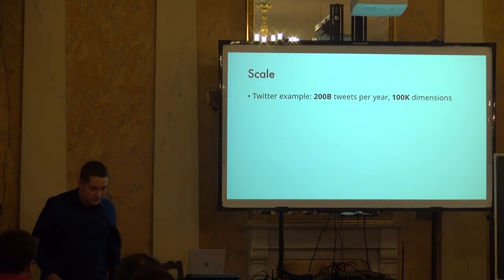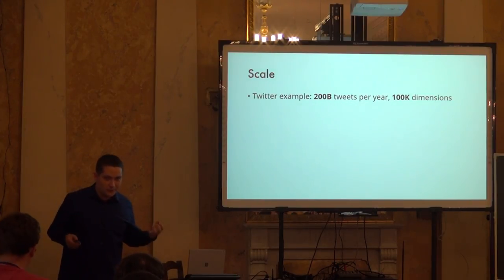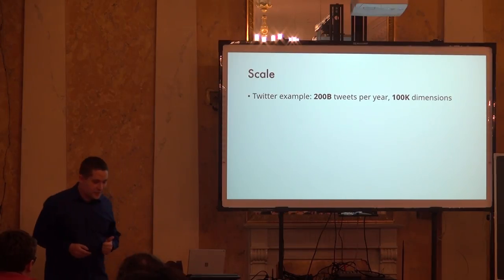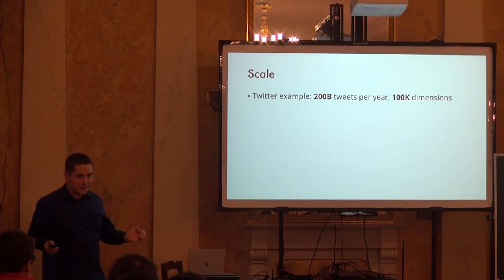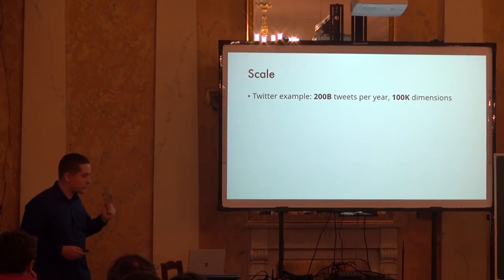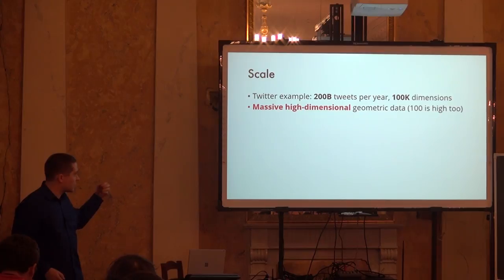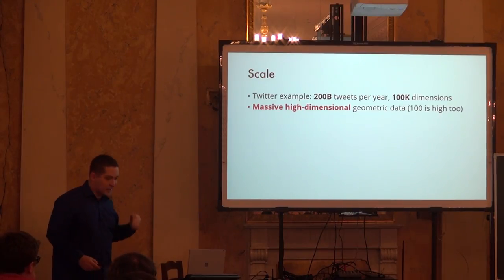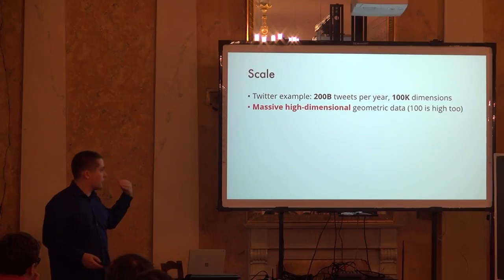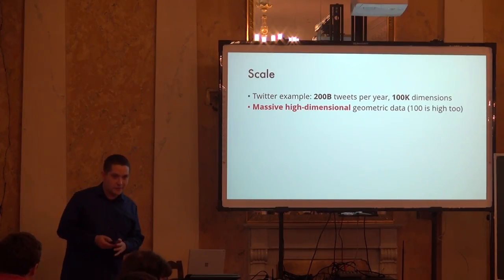The first, slightly more obvious issue is that datasets we deal with are very large — Twitter gets around 200 billion tweets per year, so our algorithms need to be extremely efficient. The slightly less obvious issue, which is the focus of this course, is high dimensionality. With a bag-of-words representation, we get one coordinate per English or Russian word, easily ending up with vectors of 100,000 dimensions or more. Even 100 dimensions qualifies as high. Essentially any meaningful feature representation gives you high-dimensional data.